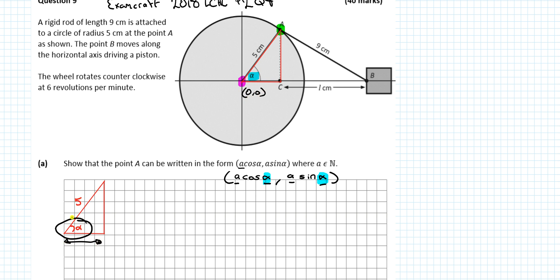Try and decide how you would describe this length here. This length, if we are calling this our angle, would be my adjacent. So what links the hypotenuse, the angle and the adjacent would be cos. So cosα equals the adjacent over 5, so 5cosα equals the adjacent. If you consider the adjacent as the x coordinate of point A, it would be 5cosα.